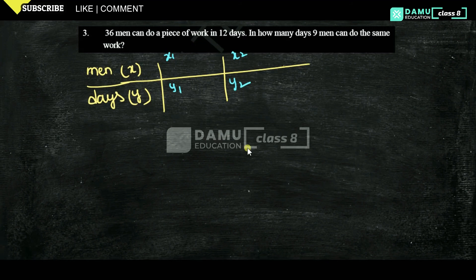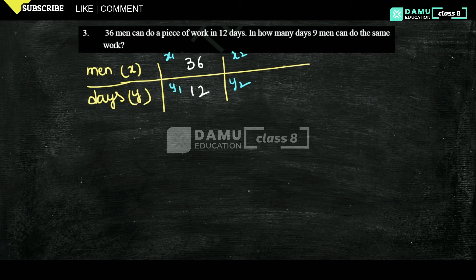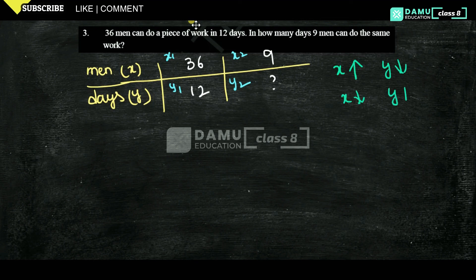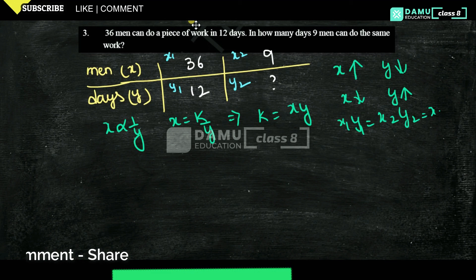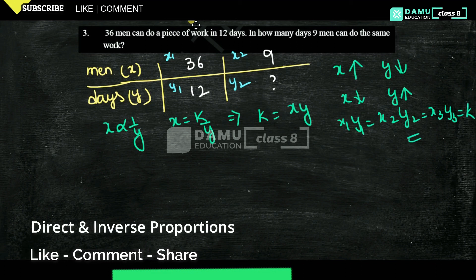Here x1 is 36 men who complete the work in y1 equals 12 days. We need to find y2, the number of days for x2 equals 9 men. If number of men increases, number of days decreases; if men decrease, days increase — so x and y are in inverse proportion. That is, x equals k divided by y, implying k equals x times y, so x1·y1 equals x2·y2 equals k. In inverse proportion, this rule always holds.